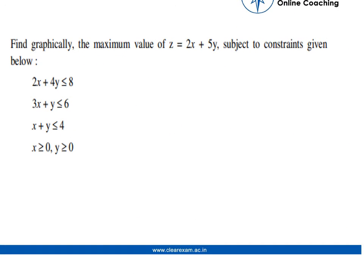Hello everyone, so here in this question find graphically the maximum value of z equals to 2x plus 5y subjected to some constraints.